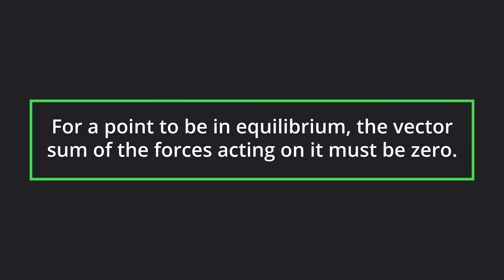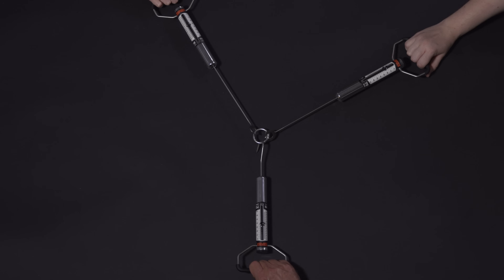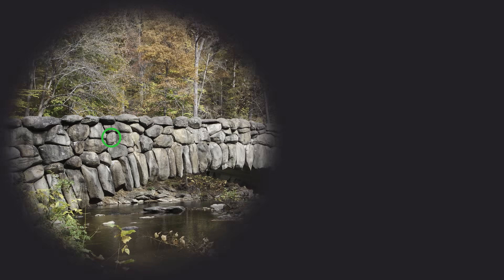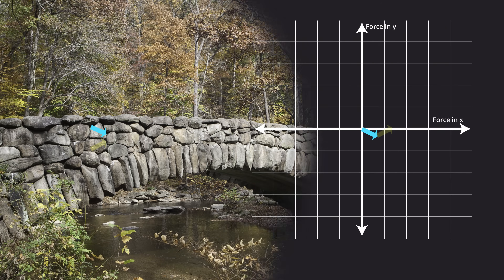This is the simple condition that all points in a structure must satisfy for them to be in equilibrium. This video has focused on well-defined points that experience tensile forces. However, the principle applies to arbitrary points, such as a stone in a large bridge, and it describes how the compressive forces acting on it must be related to each other so that it does not move.